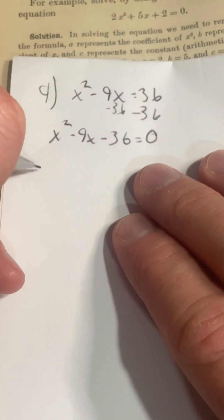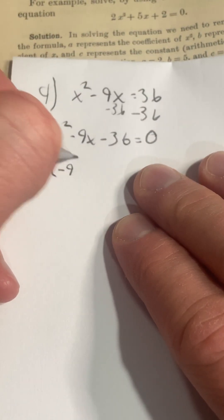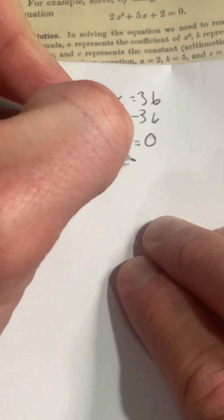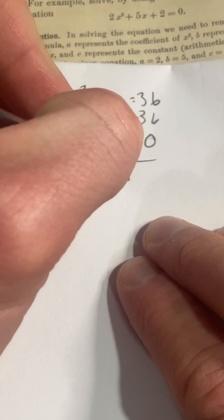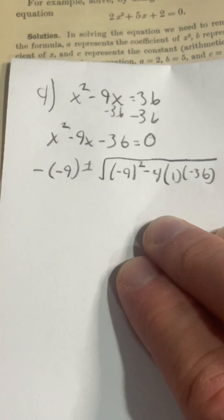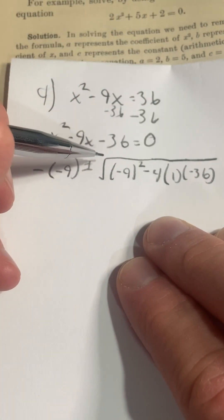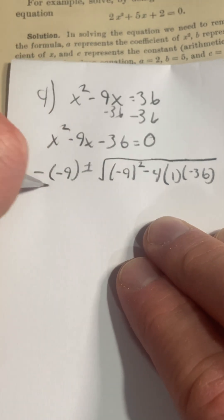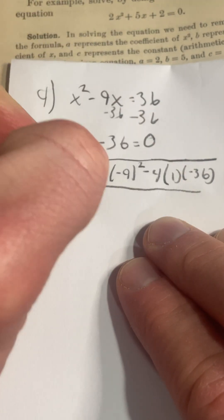And the quadratic formula is negative b plus minus the square root of b squared minus 4ac. The key here being I subtracted 36 so that makes it a negative 36 all over 2 times 1.